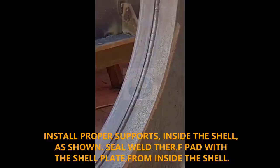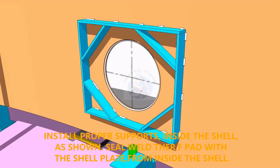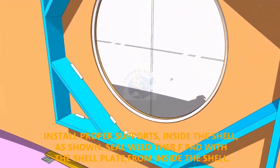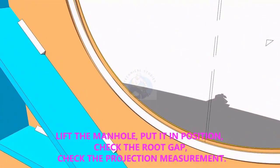Provide proper supports to control the distortion during welding. Weld a run on the joint between the shell plate and the pad plate.